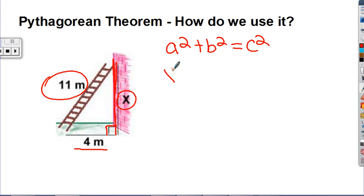I know the two short sides are x and 4, and the hypotenuse or the long side is 11. So I plug those into the formula.